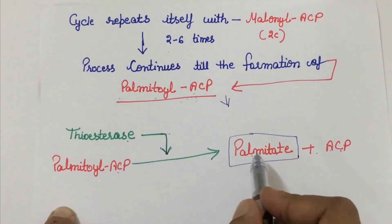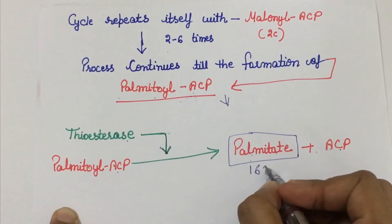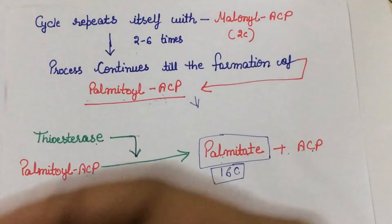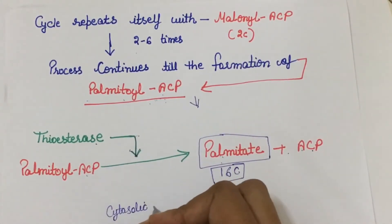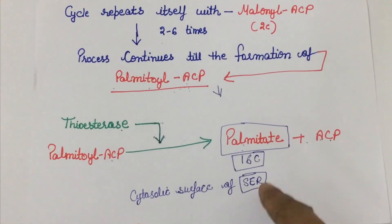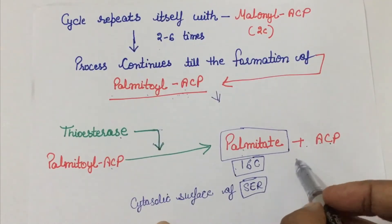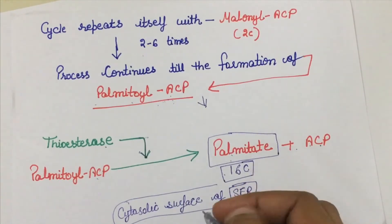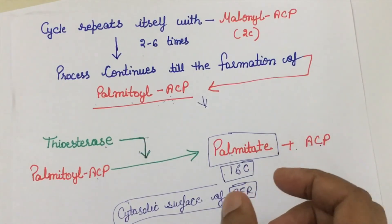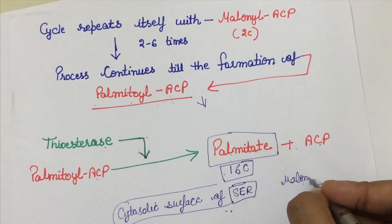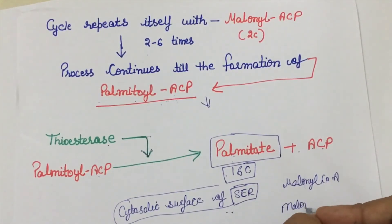In eukaryotes, elongation of fatty acids beyond palmitate — which is a 16-carbon compound — is carried out by enzymes located on the cytosolic surface of the smooth endoplasmic reticulum. Whenever the body requires fatty acids with more than 16 carbons, they are synthesized with the help of malonyl coenzyme A, and malonyl coenzyme A is used instead of malonyl-ACP.